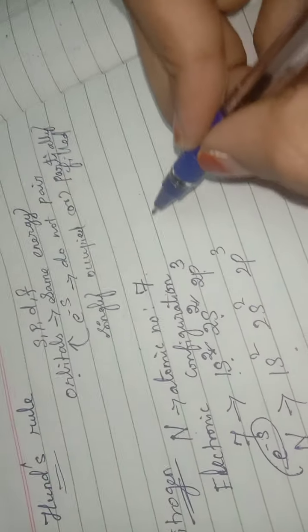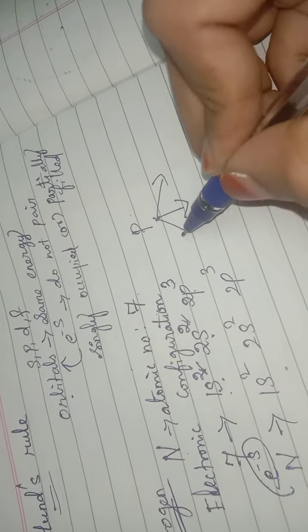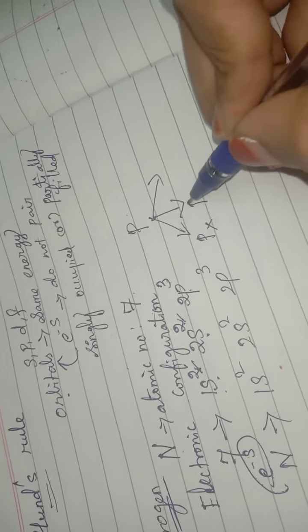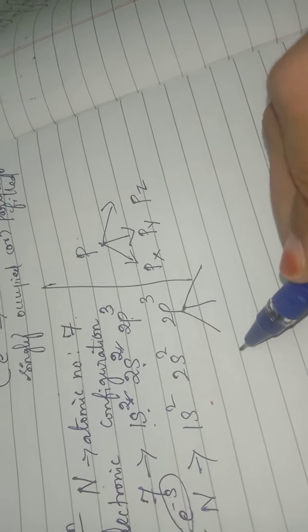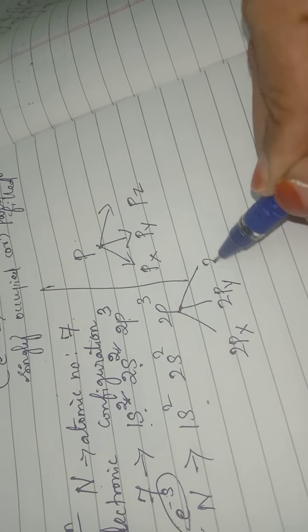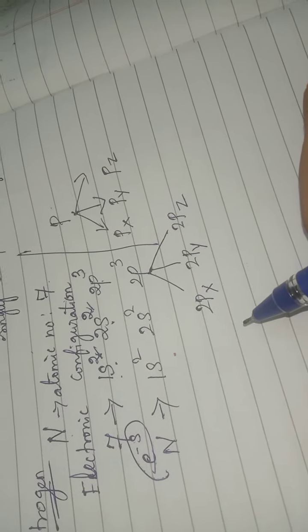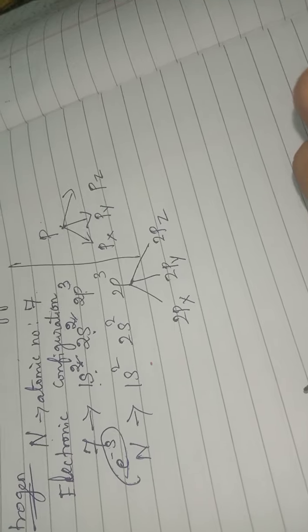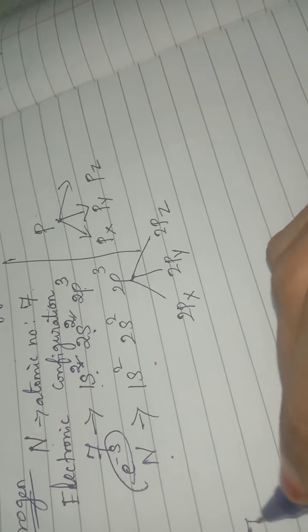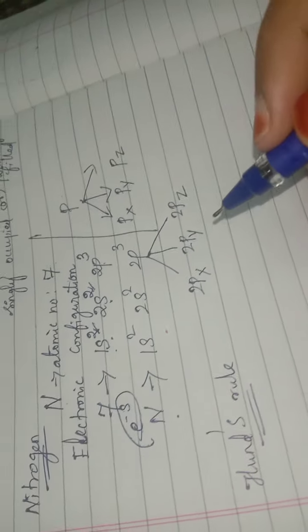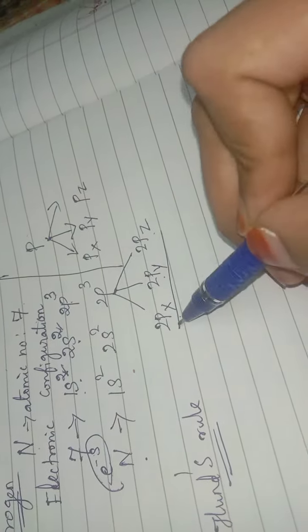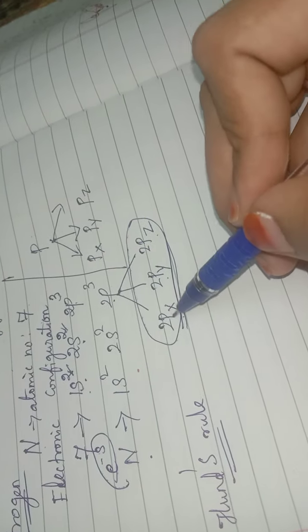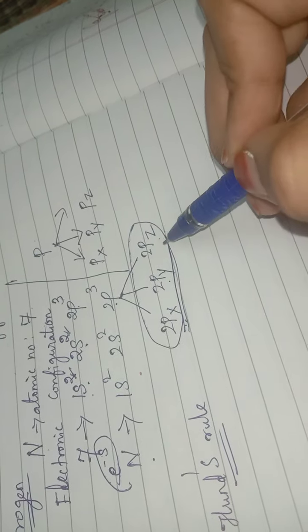The p orbital has three types: Px, Py, and Pz. So this 2p orbital splits into 2px, 2py, and 2pz. Now we are going to write the electronic configuration for nitrogen according to Hund's rule. These three 2p orbitals — 2px, 2py, and 2pz — all have the same energy level. According to Hund's rule, electrons do not start pairing; they will be singly occupied or partially filled.